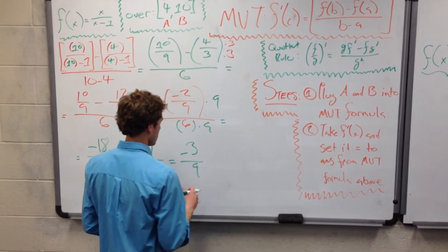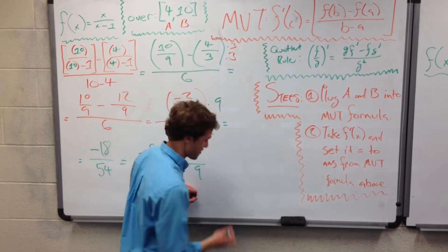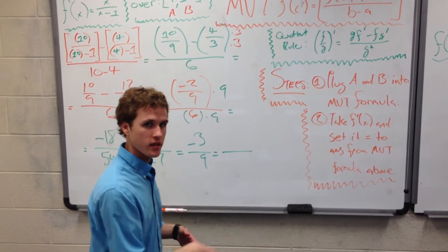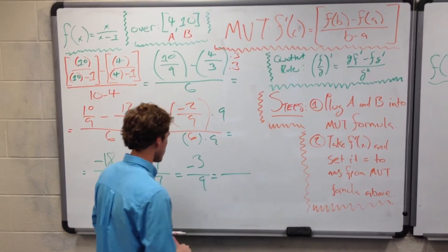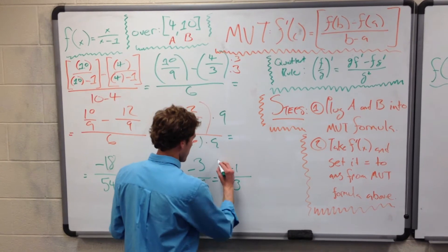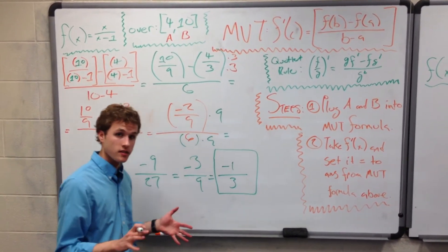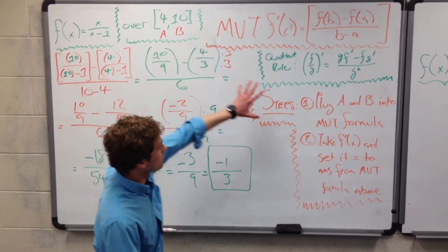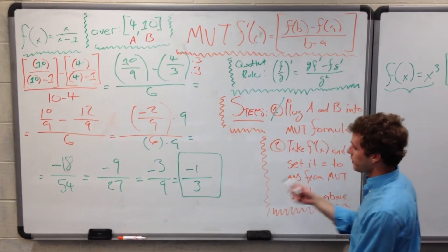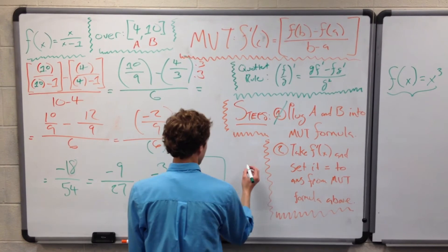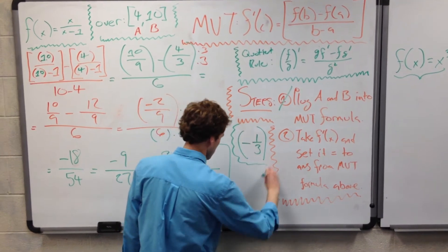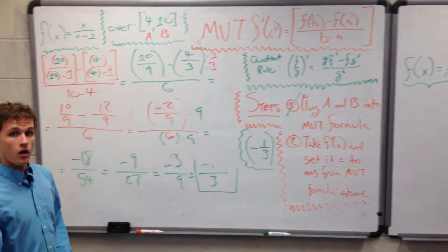And we can divide each of these by 3. So I know I'm doing every single step here that we might be able to just do in our heads, but I want to outline everything and make it as explicit as possible for anyone that's struggling to try and follow along with this. So we can divide each of these by 3, we get negative 1 third. So that is a pretty clean, nice, acceptable value. So we've done step 1. Step 1 is taken care of. We've plugged A and B into the MVT formula and we came out with negative 1 third.